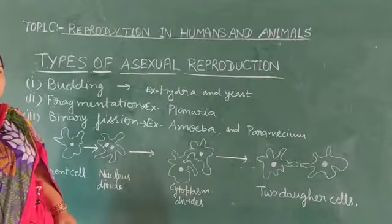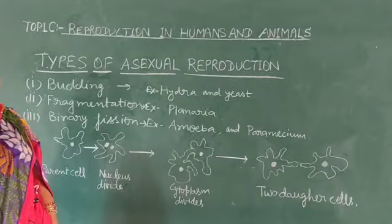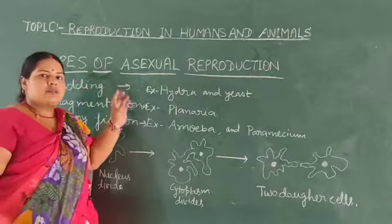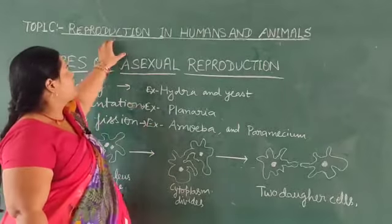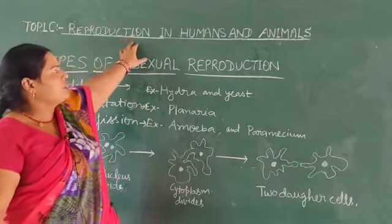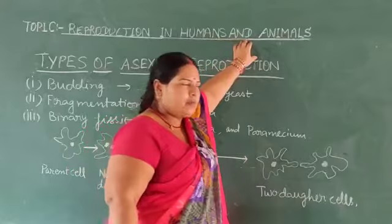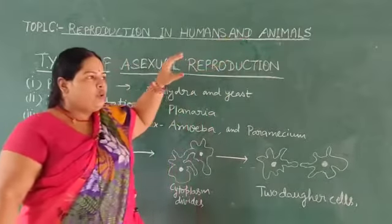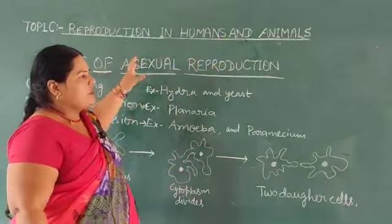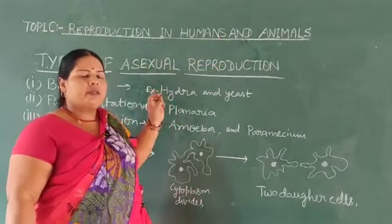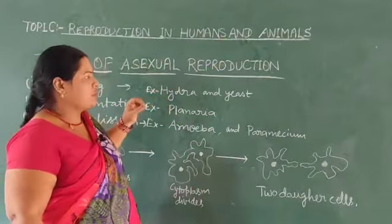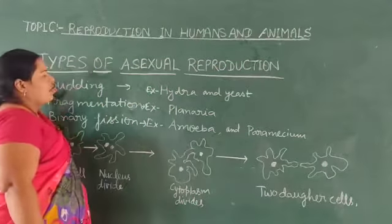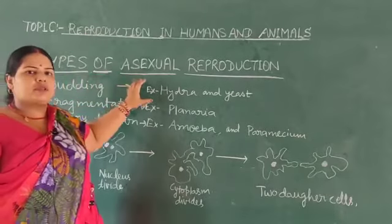Good morning dear students. Myself Rangina Mishra, taking the class of biology. Today's topic is reproduction in humans and animals. In the previous video you learned what is sexual reproduction and what is asexual reproduction. In this video you will see what types of asexual reproduction there are.